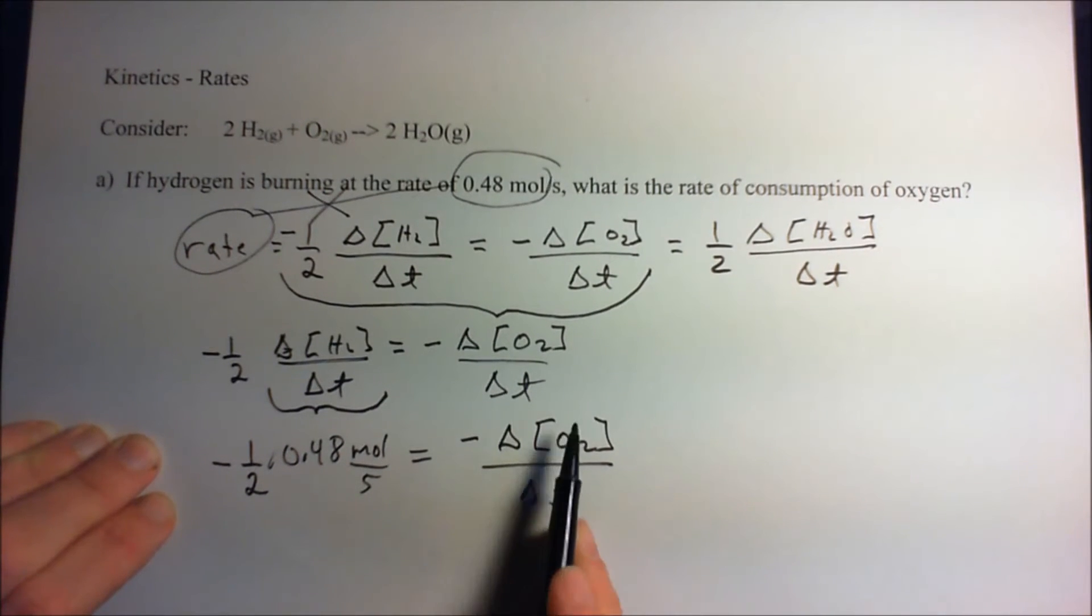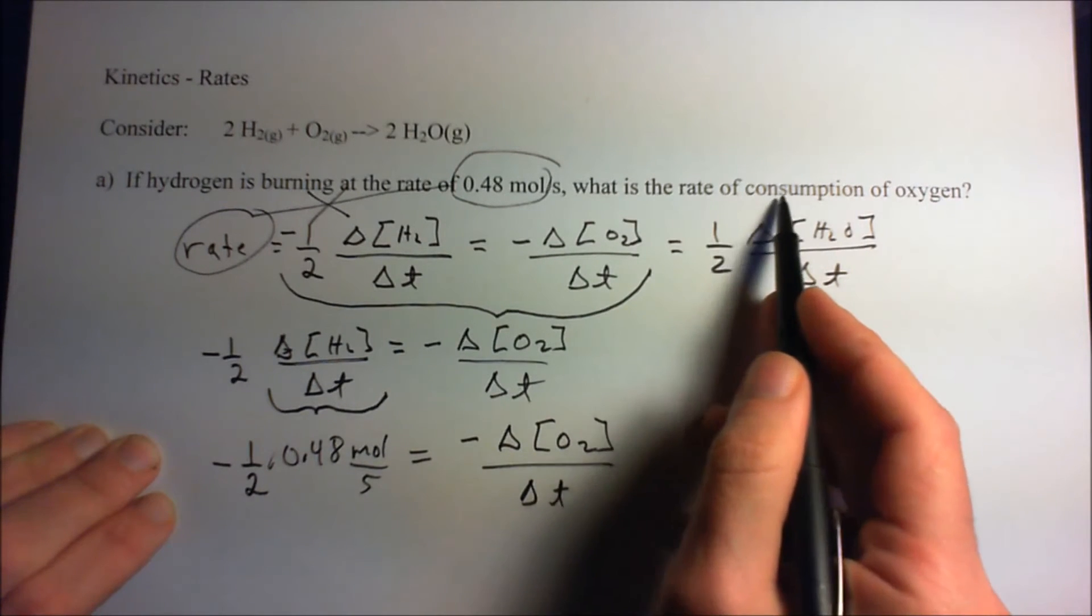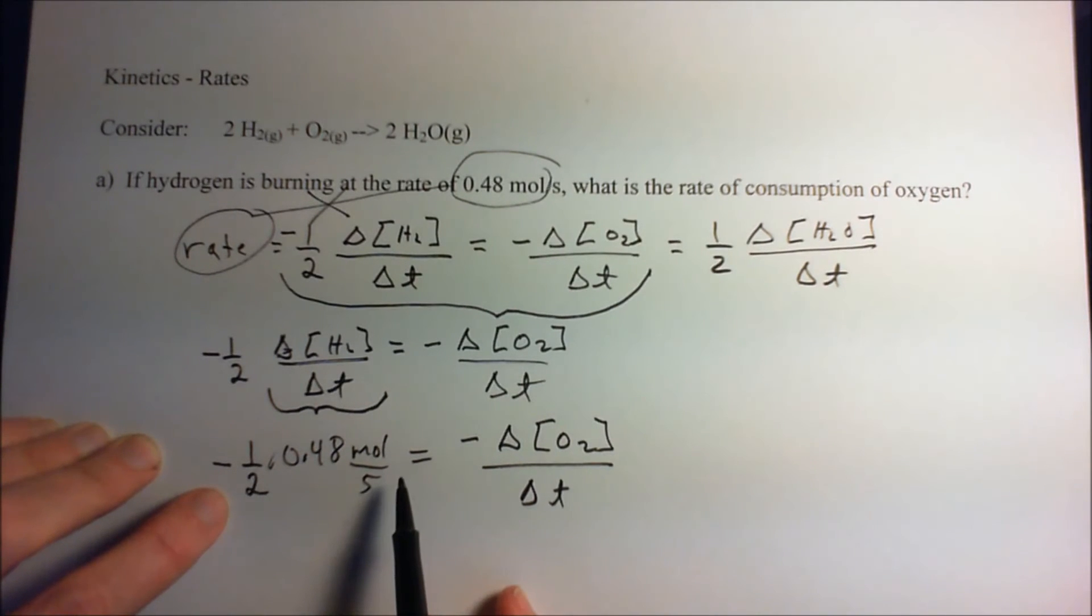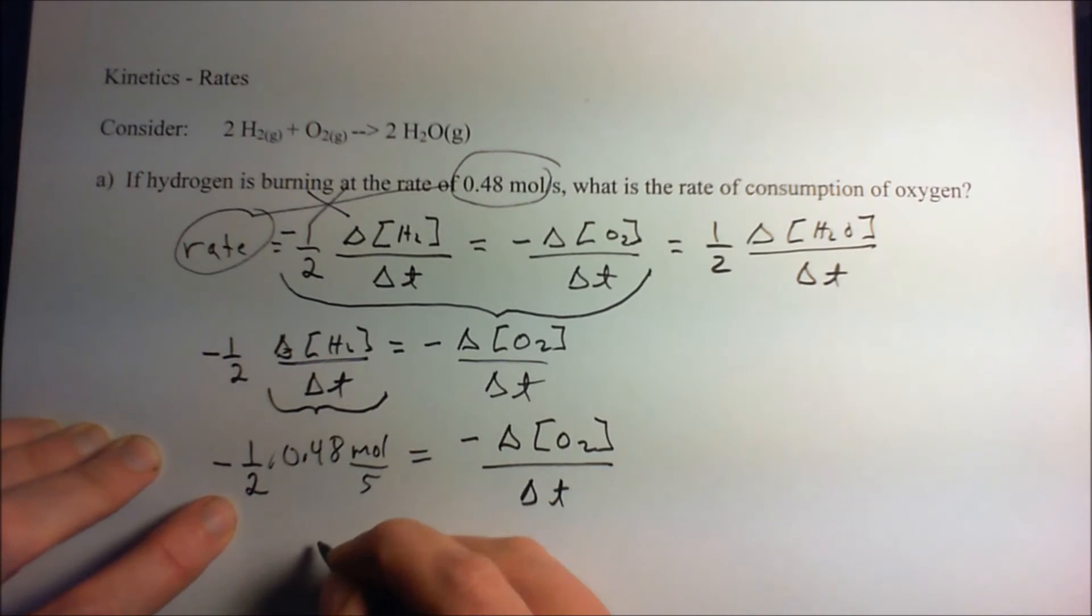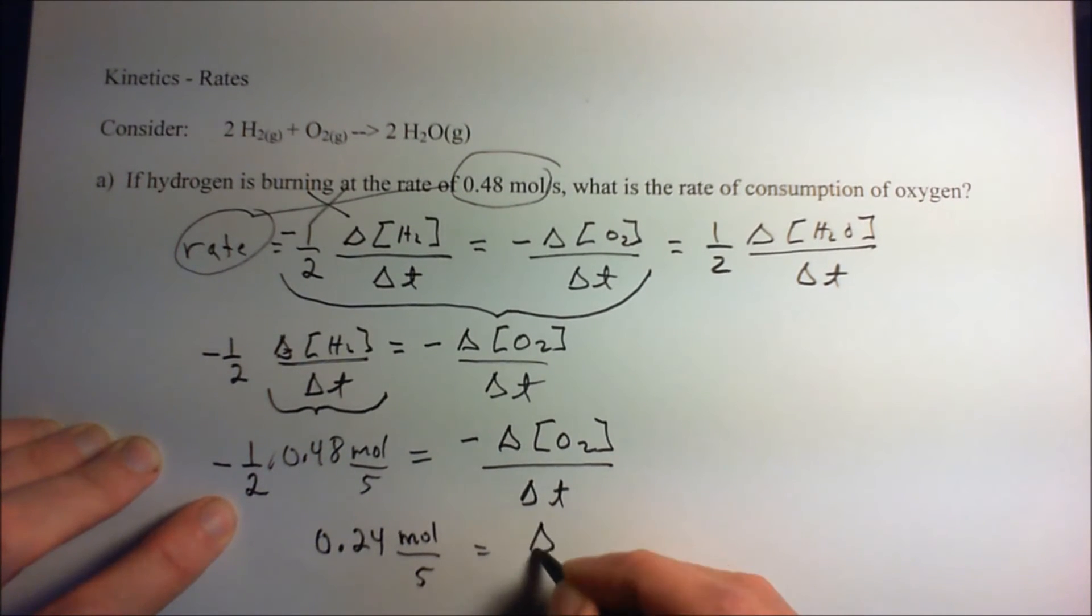And this is what we're after. We're after this rate right here, the change in oxygen with respect to time. That's what that means right there. And so really, we've already got it. All we have to do is just go ahead and finish this out with our calculator, and we have minus one-half times 0.48, and we plug that into our calculator, and we've got 0.24 moles per second is equal to the change in oxygen with respect to time.